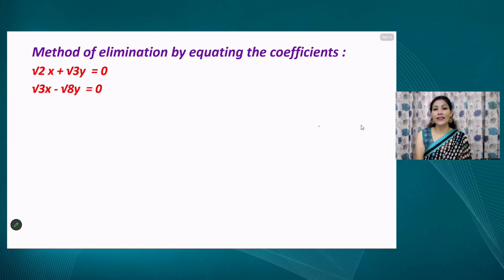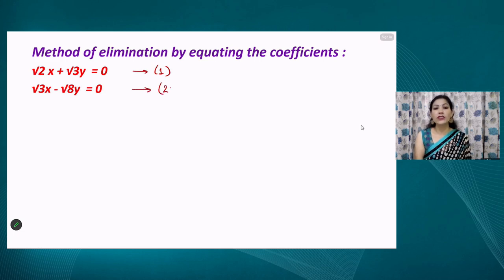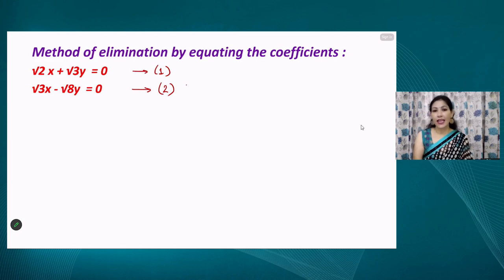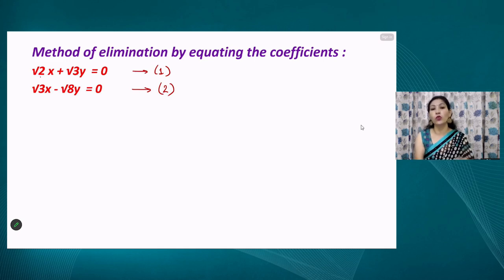Let us discuss the elimination method with a question. The first equation given is √2x + √3y = 0, and the second equation is √3x − √8y = 0. We have to eliminate one of the two variables, either x or y. We need to make the coefficients of one variable equal in both equations. The coefficient of x in the first equation is √2 and in the second it is √3.